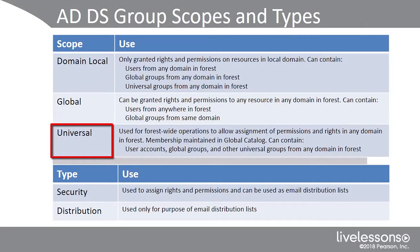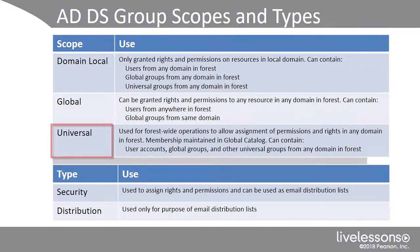Universal groups are forest-wide groups that allow assignment of permissions or access in any domain in the forest. The members of these universal groups are stored in the global catalog, and they can contain any user account, global group, or any other universal group from any domain in the forest.